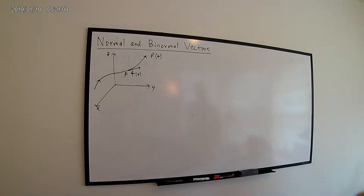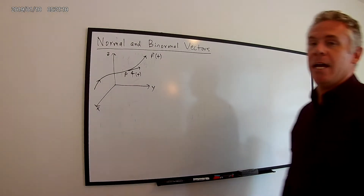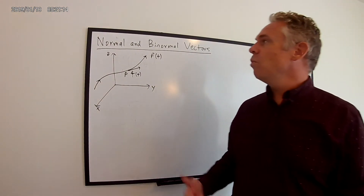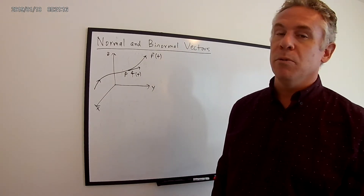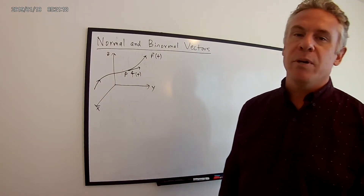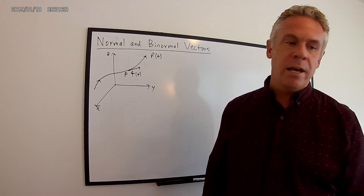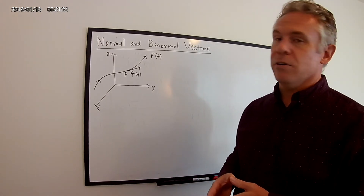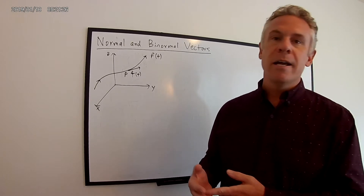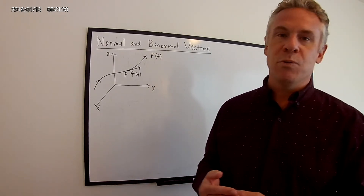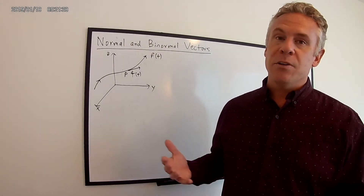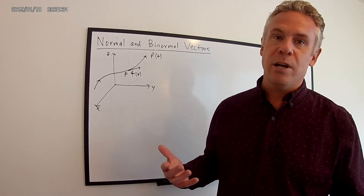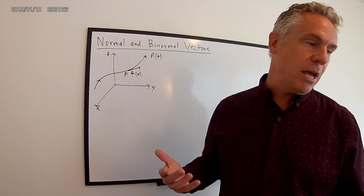This is a lecture video for Math 283. We have two topics for an upcoming class: normal and binormal vectors, and velocity and acceleration. In this lecture video, I'm just going to cover normal and binormal vectors — I'll talk about what these vectors are and do some example problems. In class, we'll talk about velocity and acceleration and do some example problems there.